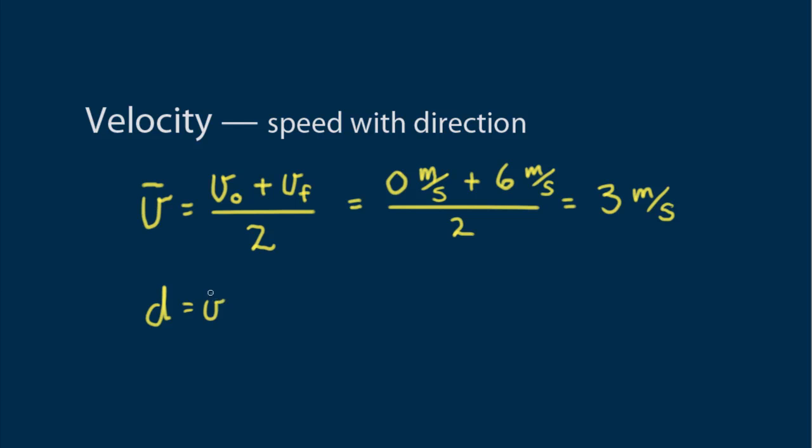Distance traveled is found by multiplying the average speed by the time interval. For example, how long is the hill we just discussed if it takes 5 seconds for Barry's ride down the hill? We see its average speed times time, 3 meters per second times 5 seconds. We see the hill is 15 meters long.